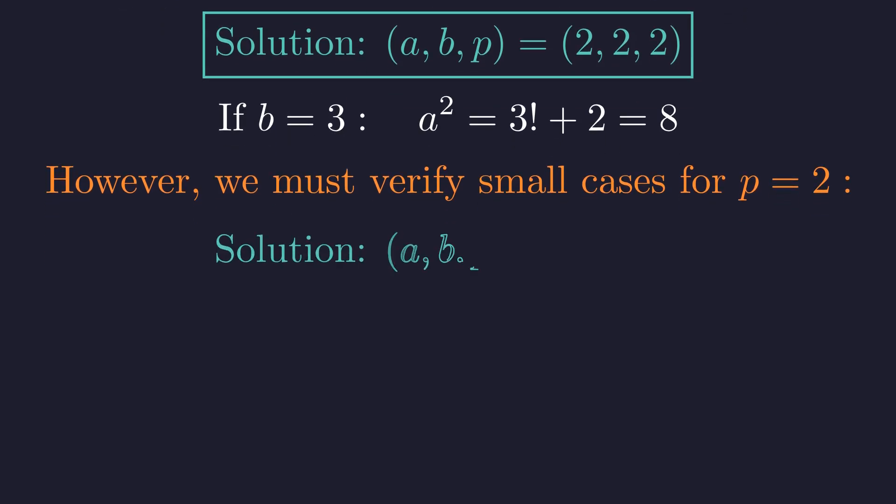From our earlier analysis, we also found that when P equals 3 and B equals 4, we get A equals 3 as our second solution.